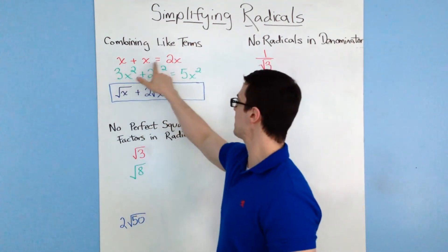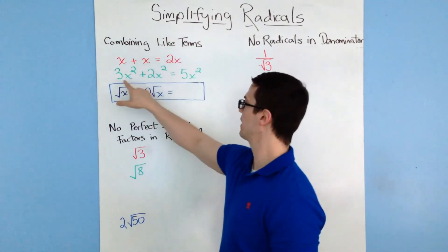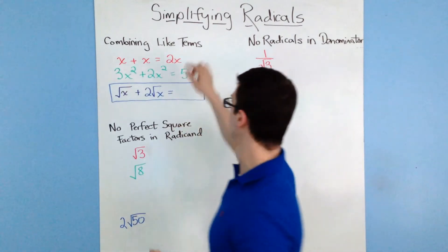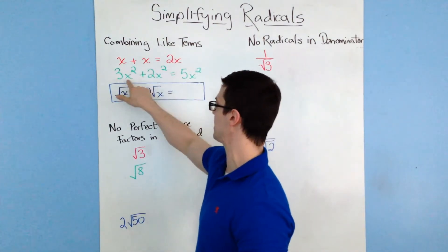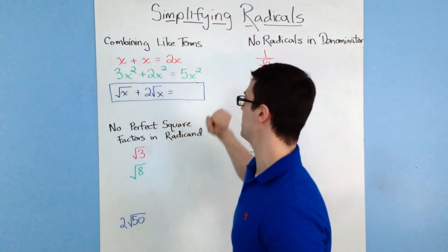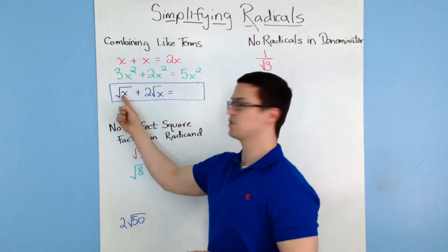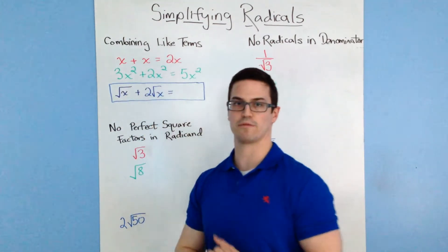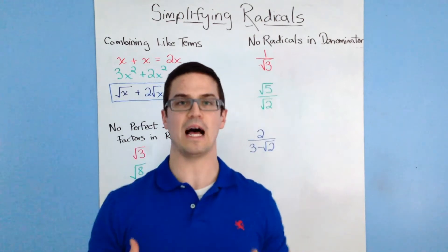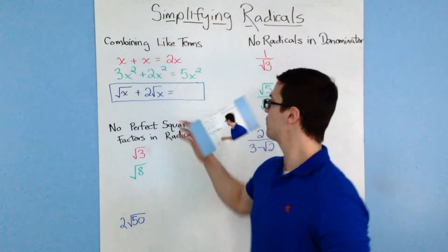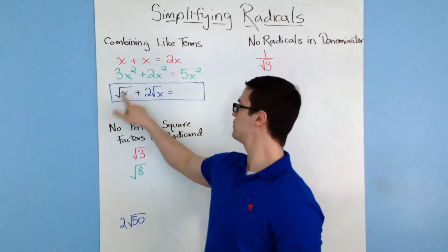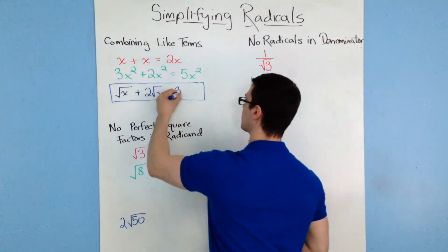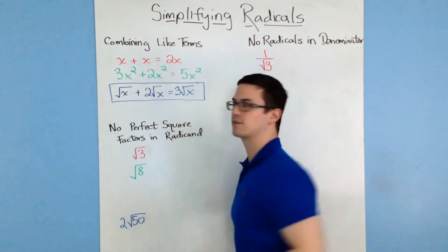x plus x would make 2x. 3x squared plus 2x squared would be 5x squared. I'm just combining the like terms of x and x, and x squared and x squared. Now if I have something like the square root of x plus 2 times the square root of x, the same rules apply for combining like terms. So the answer would be 1 square root of x plus 2 square root of x, which gives you 3 times the square root of x.